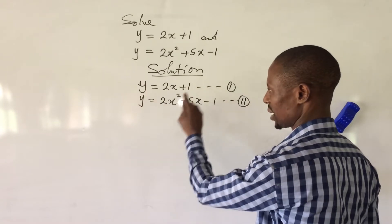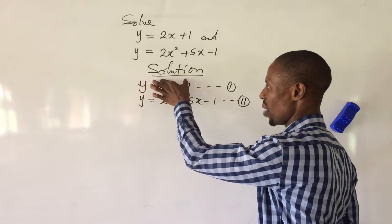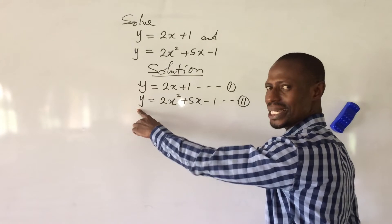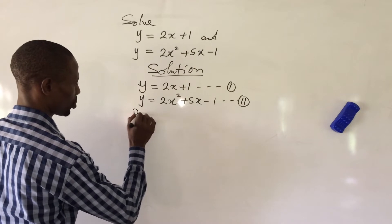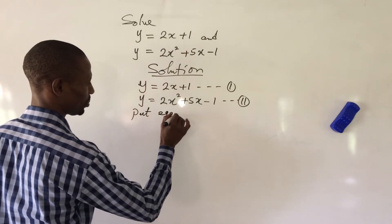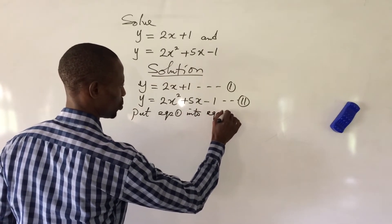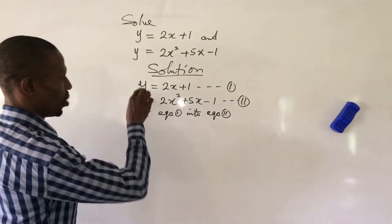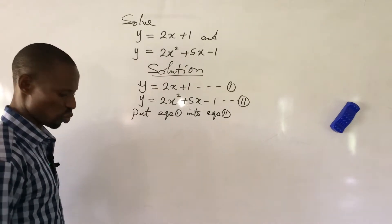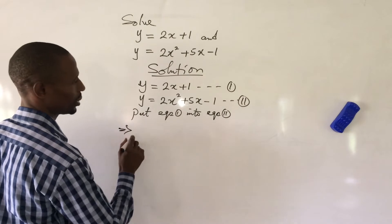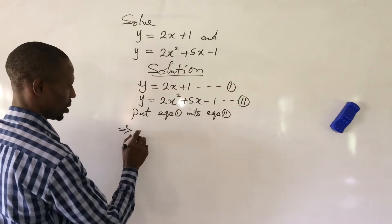We are having y equal to this and y equal to this. In other words, we can substitute equation 1 into equation 2. It means whenever we see y in the second equation, we put in 2x plus 1. So we are having y here, and we replace it with 2x plus 1.